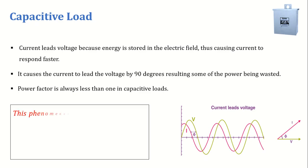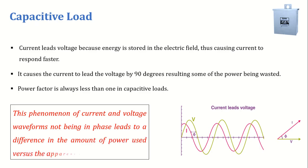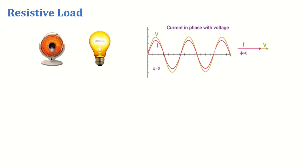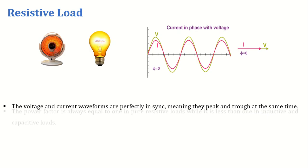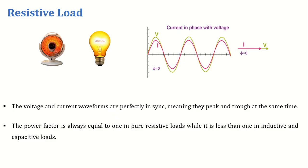This phenomenon of current and voltage waveforms not being in phase leads to a difference in the amount of power used versus the apparent power delivered. I hope you got the idea. There is another type of load too, called resistive load. Resistive loads convert electrical energy entirely into heat, making them simple and efficient for applications like heating and lighting. In a purely resistive circuit, the voltage and current waveforms are perfectly in sync, meaning they peak and trough at the same time. So the power factor is always equal to 1 in pure resistive loads, while it is less than 1 in inductive and capacitive loads.